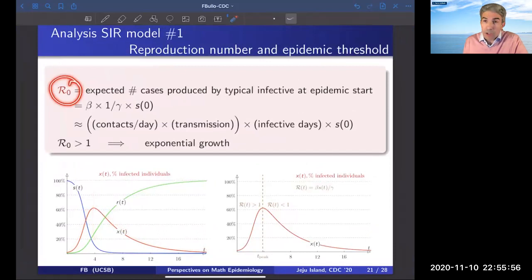There's a simple formula for it here. It's related to how many contacts per unit time, what's the transmission rate, how many unit time is the individual infected. It's basically giving you the number of individuals that are going to be secondary infections generated by one infected individual. When this basic reproduction number is greater than one, of course, there's exponential growth.